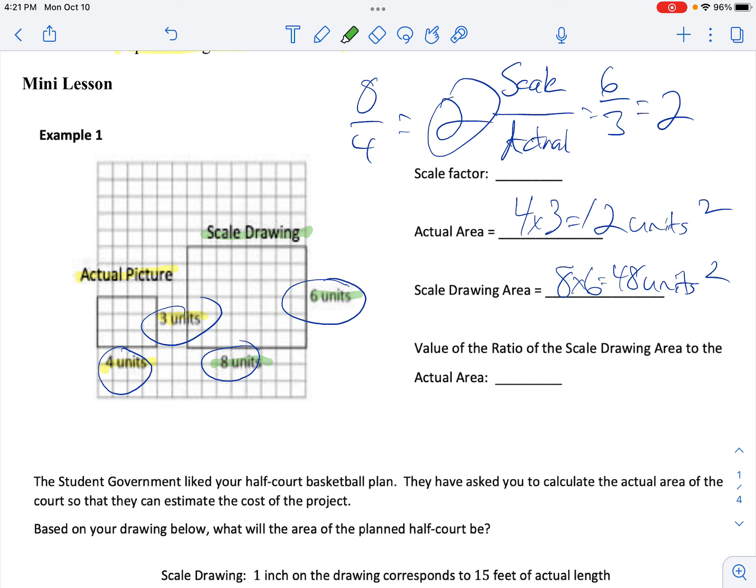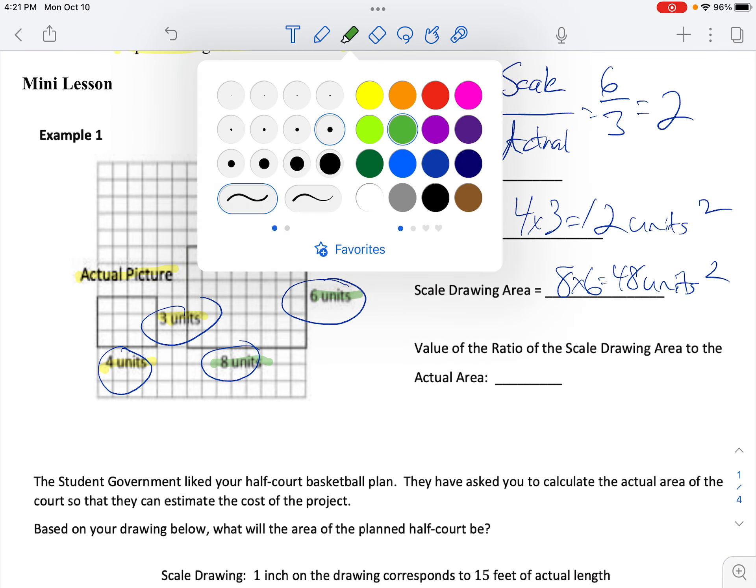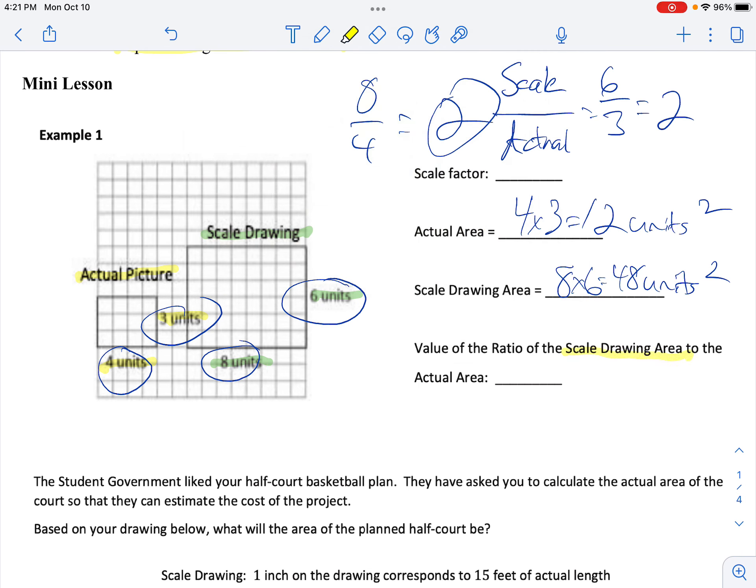Value of ratio of Scale Drawing Area to Actual Area. Scale Drawing Area, that's where the fraction bar goes, over Actual area. Scale Drawing Area is 48 units. 48 divided by actual area is 12. 48 divided by 12 is 4.